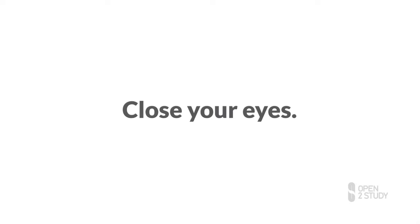Now, listen to my voice. As I speak, I'm causing changes in the air pressure in the room. And these changes in air pressure are causing your eardrums to vibrate. That movement is being transmitted to a receptor within your ear and it's sending an electrical signal to the brain — that part of the brain involved in the perception of sound.